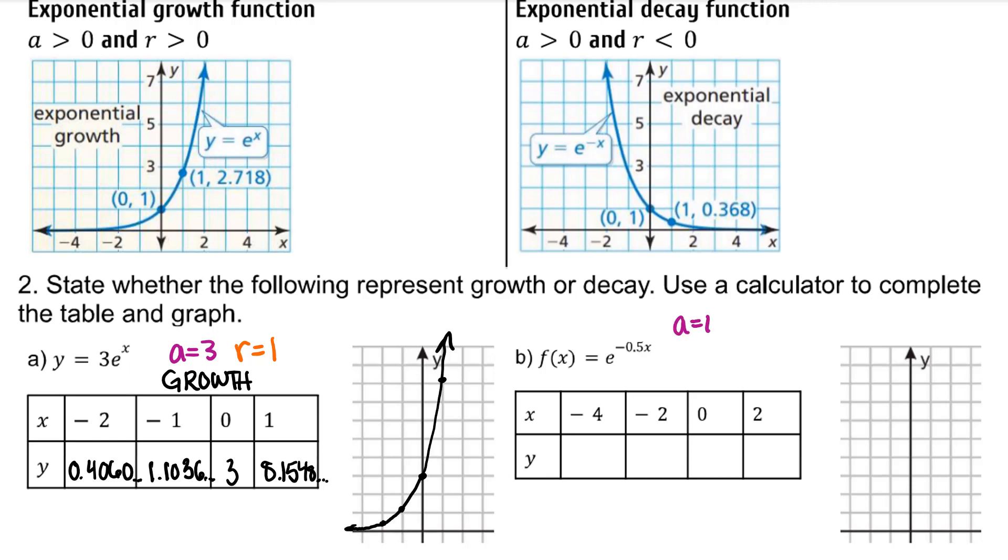For part B, A equals 1 and r equals negative 0.5. So r is negative, which means we have exponential decay here. Now plug these into a calculator and then graph your exponential function.